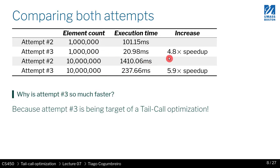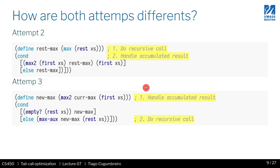We saw an improvement of around five times faster — for a million elements we went from 100 milliseconds down to 20 milliseconds. That's good, but it's not very clear why this code is faster. To understand, we need to look at the two differences between attempt two and attempt three.